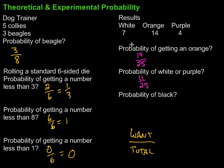Then the probability of black. I don't see any black results, so the probability based on our experiment must be 0 out of 25, or just 0.